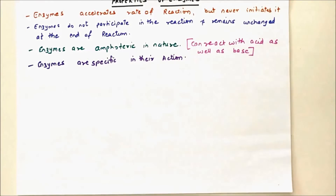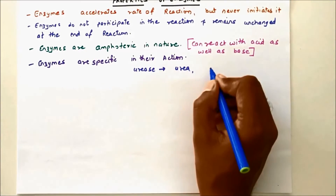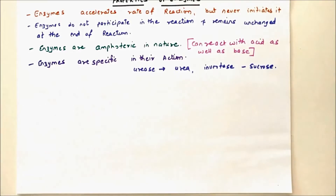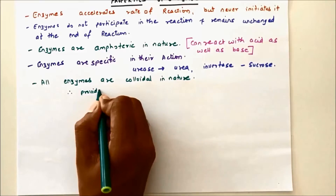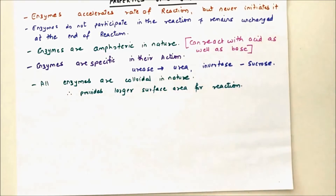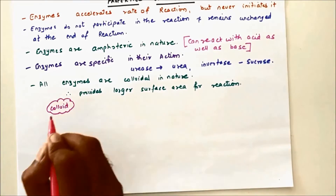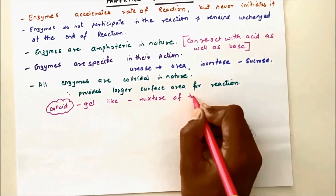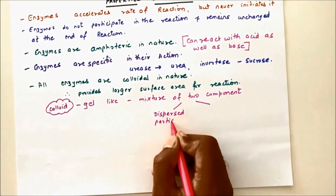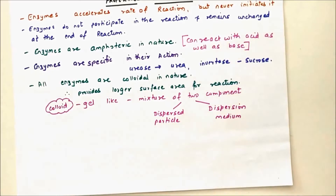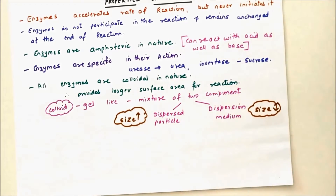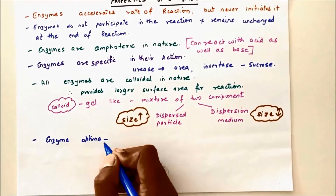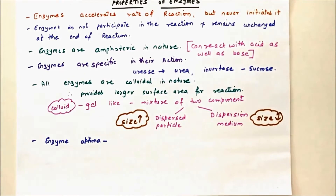All enzymes are specific in their action. Every substrate has a fixed enzyme. For example, urease can break only urea, and invertase can break only sucrose — invertase will never break urea as there is no lock and key mechanism between them. All enzymes are colloidal in nature, providing a larger surface area for reaction. A colloid is a gel-like substance consisting of a dispersed particle and dispersion medium.